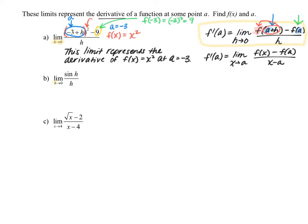Again, we have the giveaway — h approaching 0 — that we're using the first limit definition of a derivative. This looks a little different, though, because we don't actually see any subtraction in the numerator. But if I extend this, I really have sine of h minus 0 in the numerator — sine of h minus 0, all divided by h. So we do have subtraction, it's just not written because it's 0. Let's look for a plus h: I have h here but there isn't an a, so sine of h is really the sine of 0 plus h, meaning a could be 0.